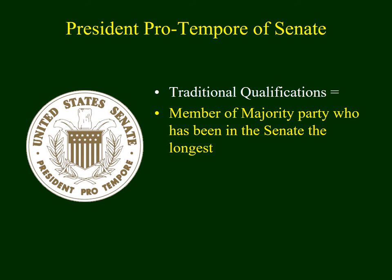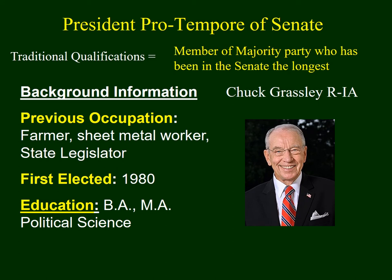Because the Vice President can't always be there, there's another position identified in the Constitution called the President pro tempore of the Senate. Based upon tradition, this is a member of the majority party who's been in the Senate the longest. The current President pro tempore is Chuck Grassley. He grew up on a farm, has a bachelor's and master's degree in political science, and he and his wife married in 1954 — a marriage lasting well over 60 years.